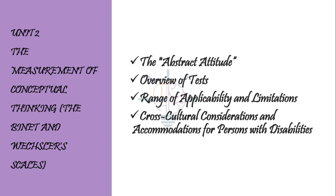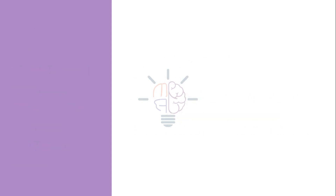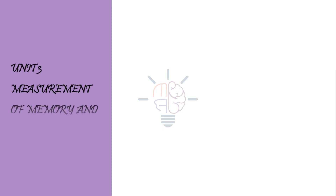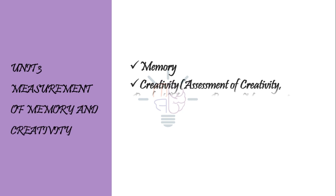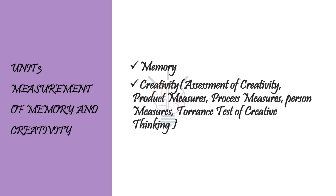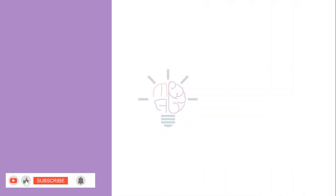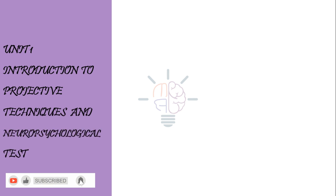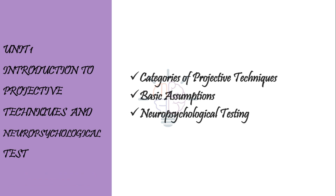Also from Unit 2: cross-cultural considerations and accommodations for persons with disabilities. From Unit 3: memory theory and creativity, including assessment of creativity — product measures, process measures, person measures — and Torrance's Test of Creative Thinking. You can omit Unit 4. From Block 4 Unit 1: categories of projective techniques, basic assumption, and neuropsychological testing.